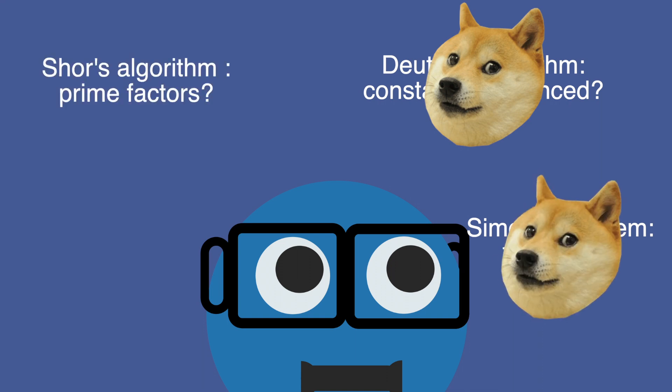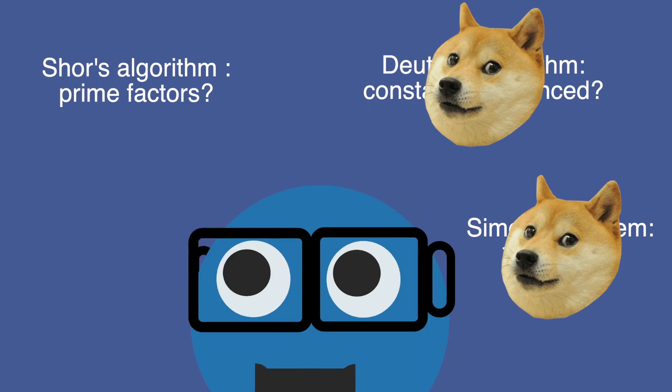Does a quantum computer's ability to find the prime factors of any number have any relevance in my life? Actually, this one does because it could render RSA cryptography useless and nullify all privacy on the internet.